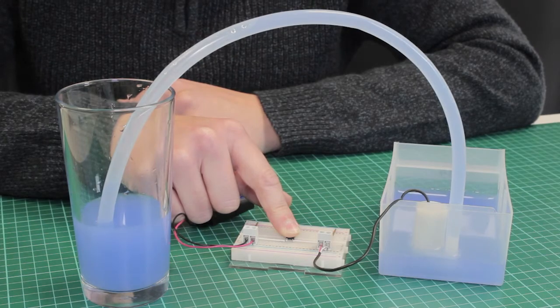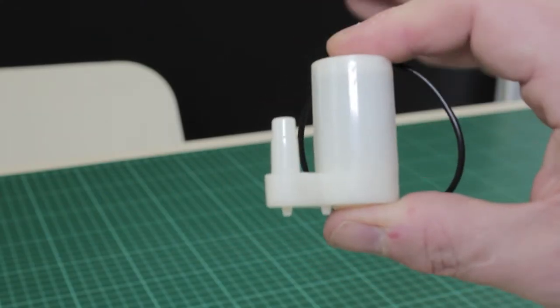This pump needs only 3 volts and 100 milliamps of power. It can be controlled directly from a microbit V2 using either PWM to vary the pumping rate or simply by turning the motor on and off.